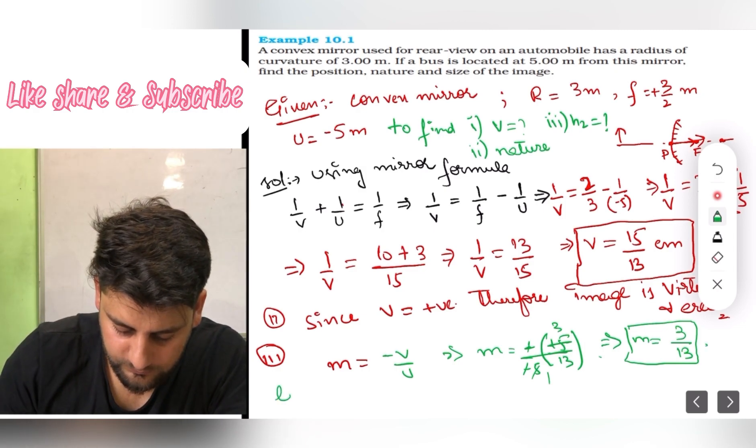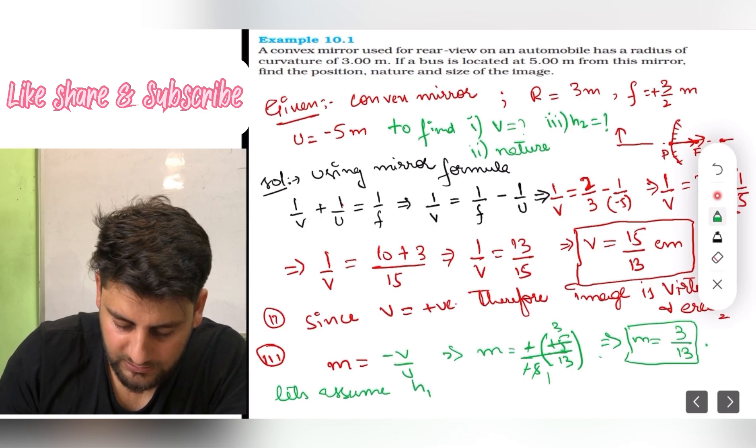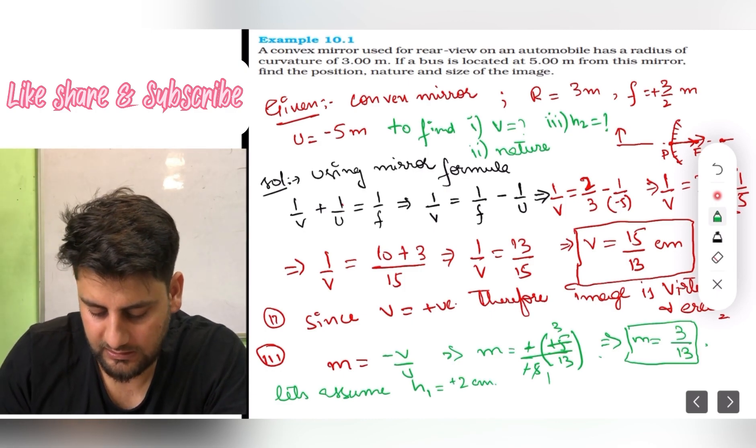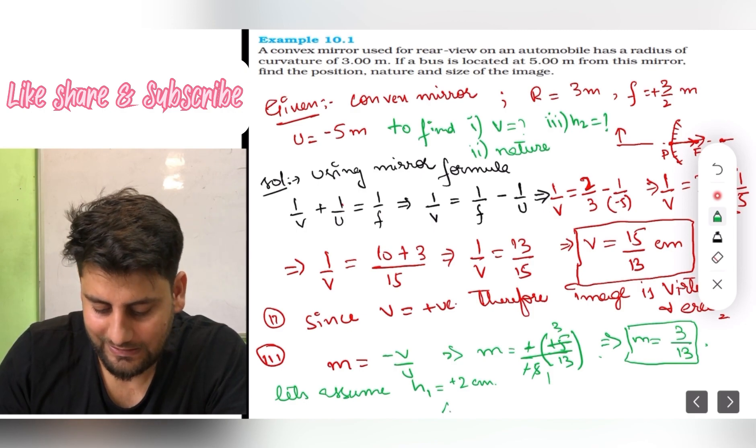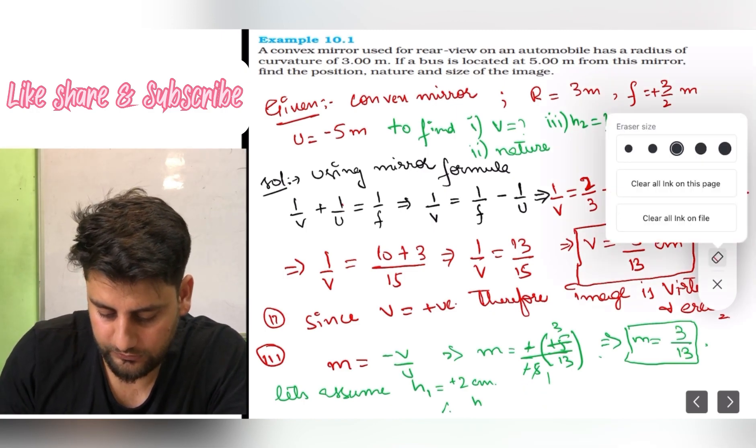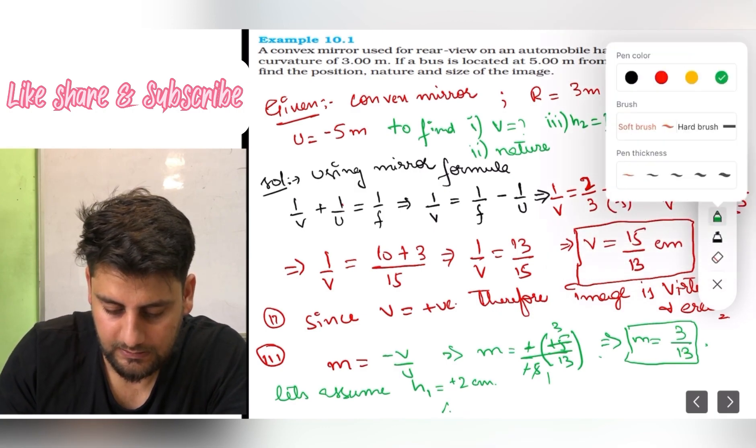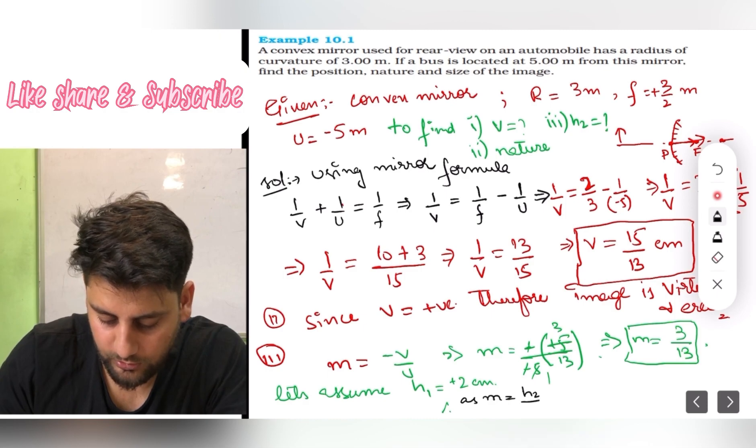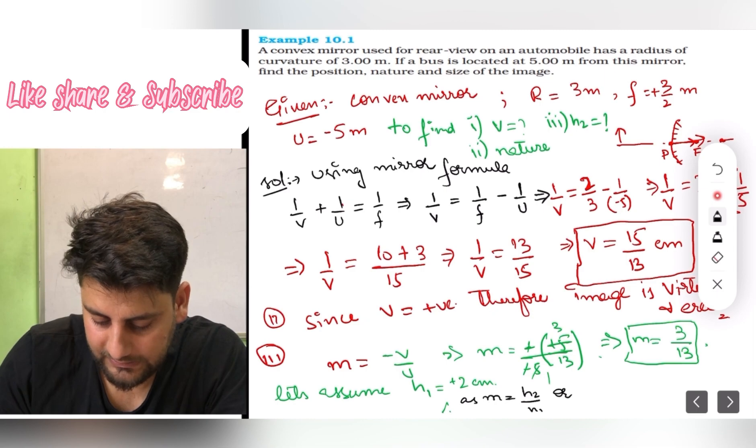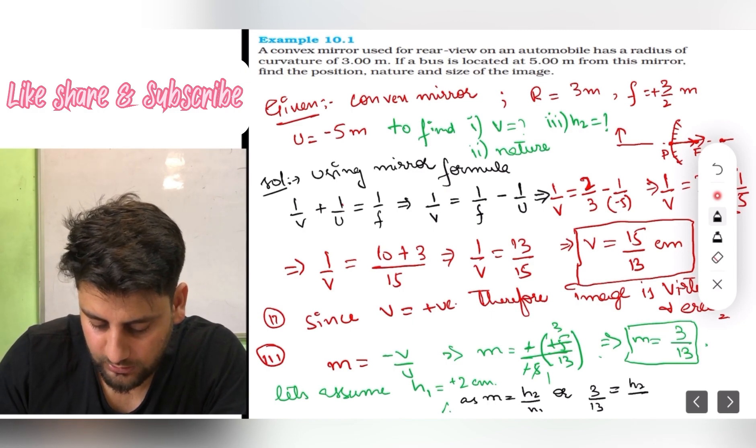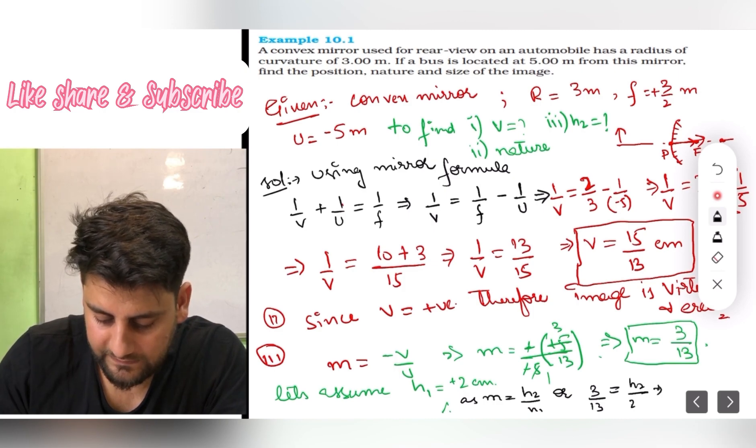Now let's assume h1 is equal to 2 centimeters. h1 I have assumed as 2 centimeters plus. Therefore, h2, I can directly calculate using magnification formula. So I can say then, as m is equal to h2 upon h1, and m we calculated is 3 by 13 equals h2 upon 2.